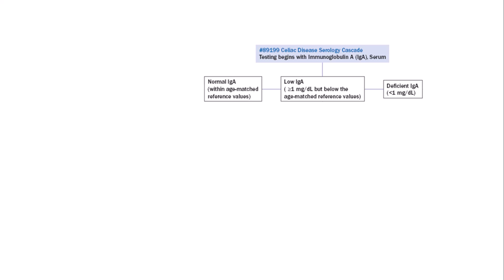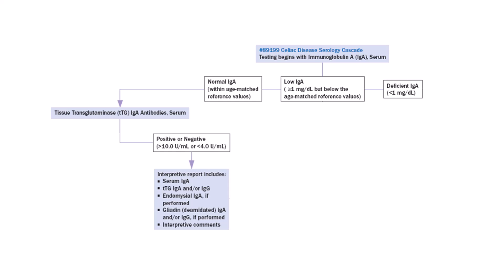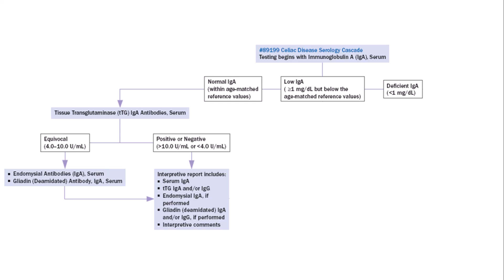The serologic cascade begins with total IgA quantitation, with all further testing reflexing automatically within the lab based on the total IgA result. The total IgA result is classified as normal, low but still detectable, or deficient and undetectable by our nephelometric assay. All samples with a normal total IgA result automatically reflex to a TTG IgA antibody. For all samples testing positive or negative, no further testing is required. The final report includes the total IgA and TTG IgA results along with an interpretive comment. However, if the TTG IgA result falls into the equivocal range, then EMA and deamidated gliadin IgA testing is performed, and these results are included in the final report.